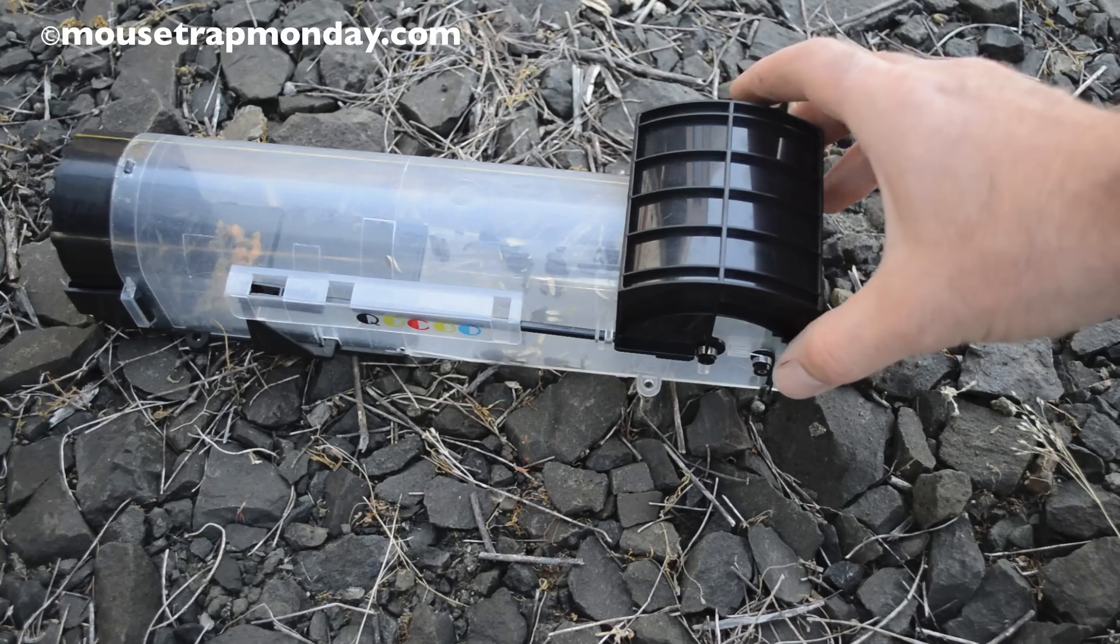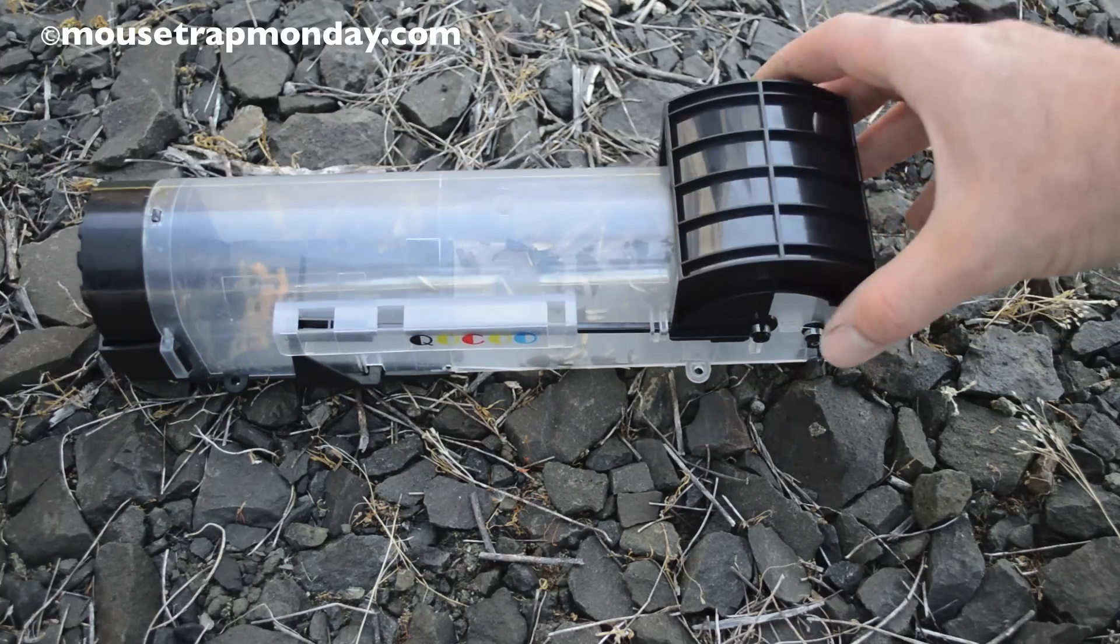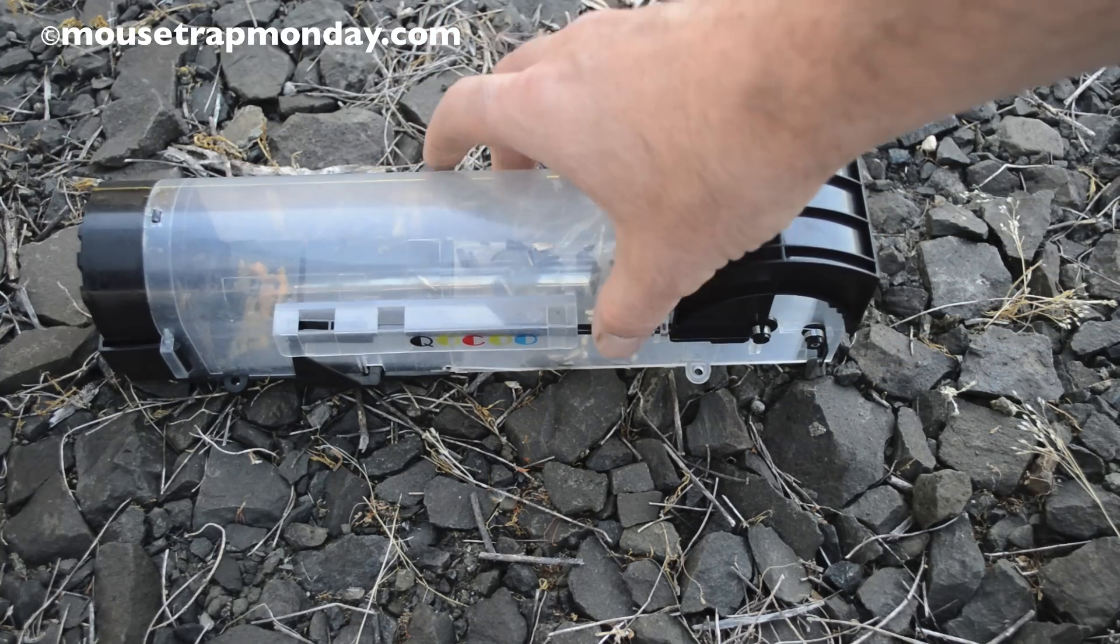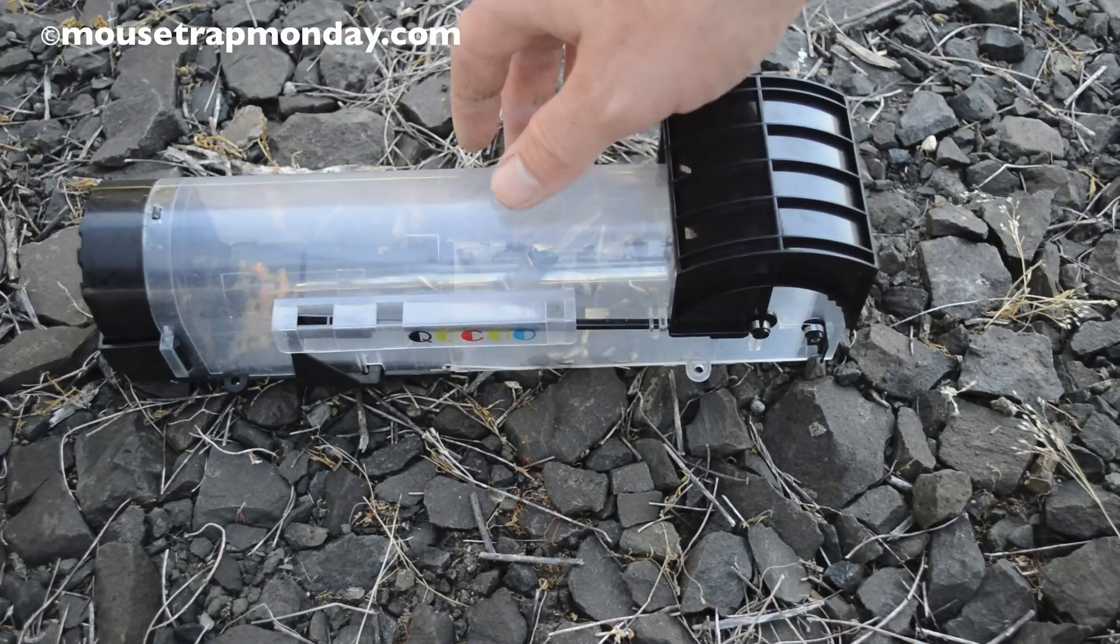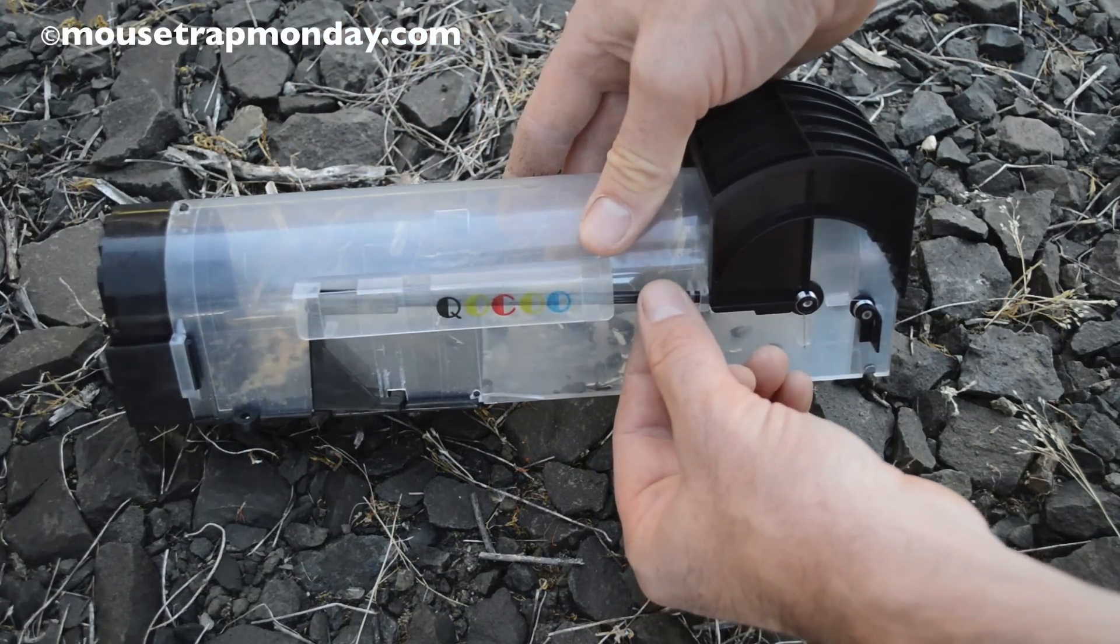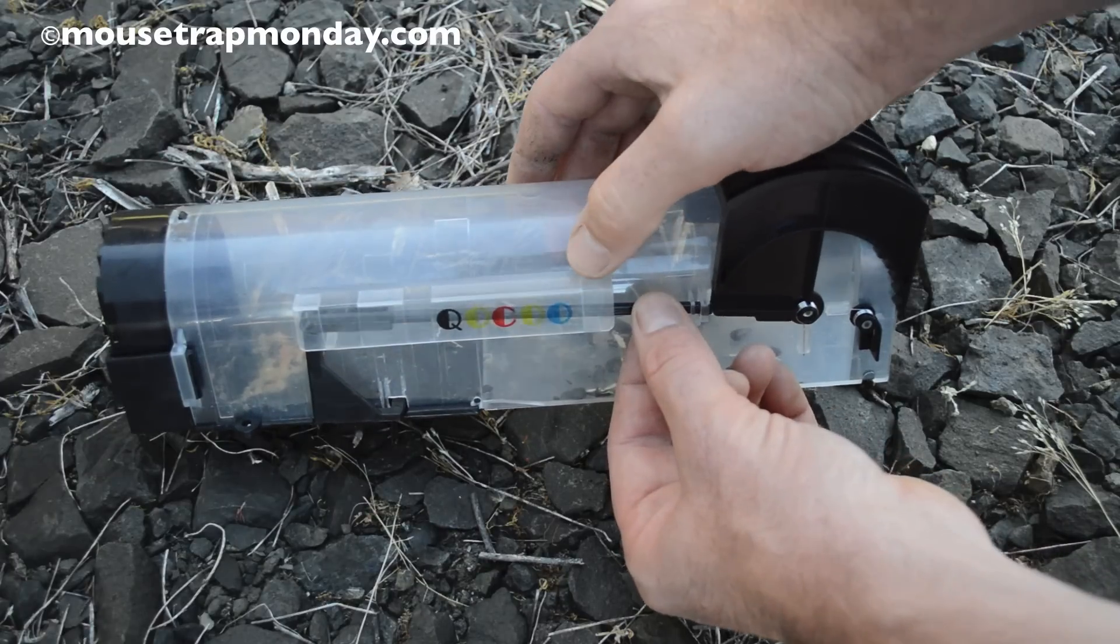Now one thing I learned with these traps is that mice are pretty light, and if you set this all the way back, it's difficult to trap them. They'll go and get the bait and run out. What I had to do is I actually had to pull this little lever almost all the way back until the door almost opened and make it a hair trigger.